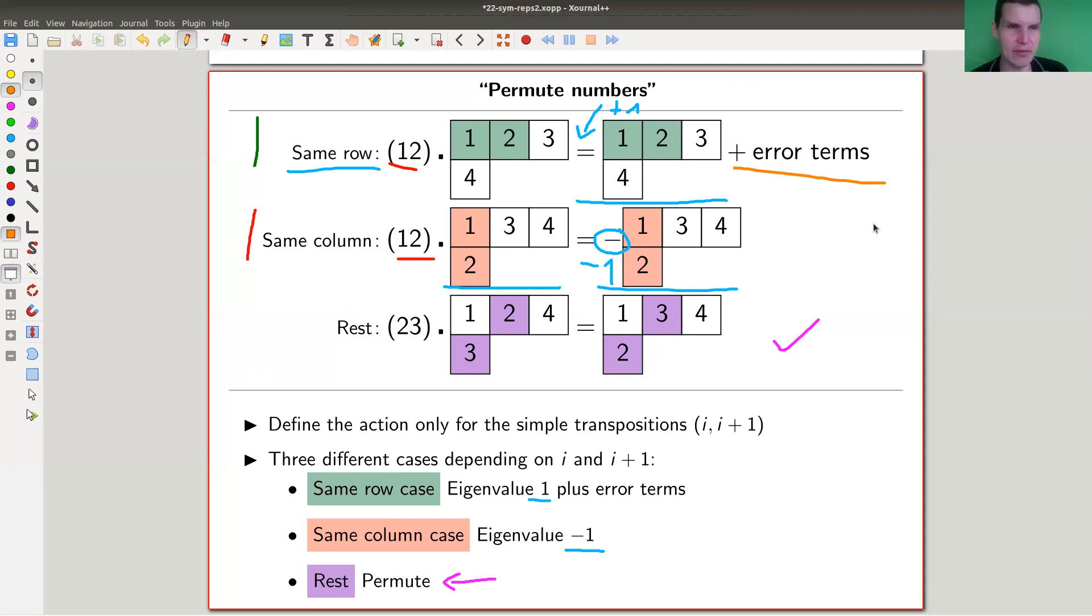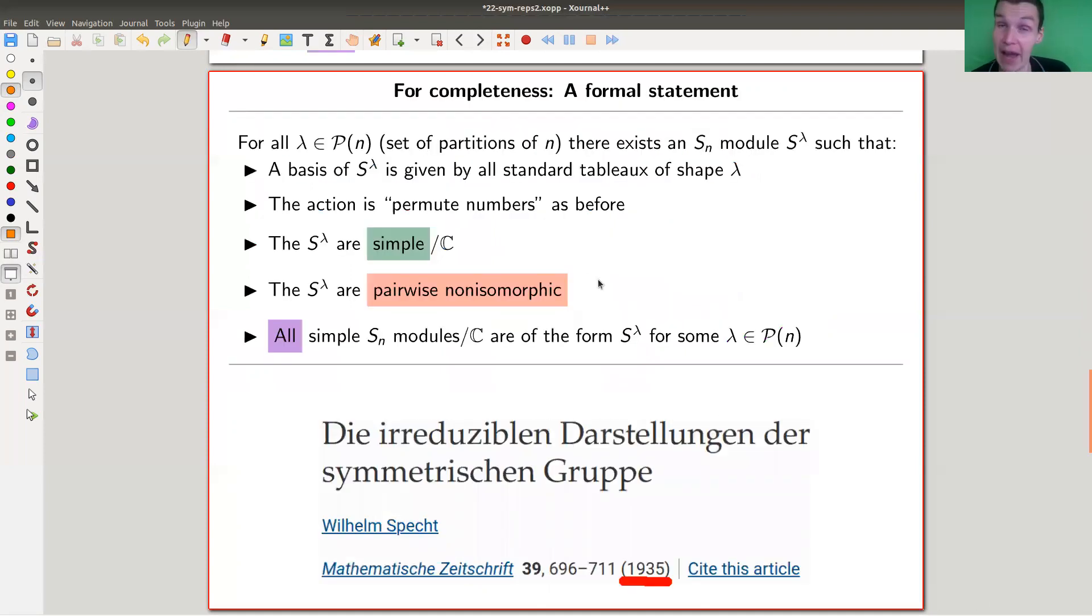The main idea really is you permute, and whenever you can't do that, you put eigenvalue one or minus one. You need to fix that—it doesn't really work by using some error terms. But let's not go into that. Otherwise this is really cool. There's a very explicit vector space associated to each Young diagram with a very explicit basis and a very explicit action. That's awesome.